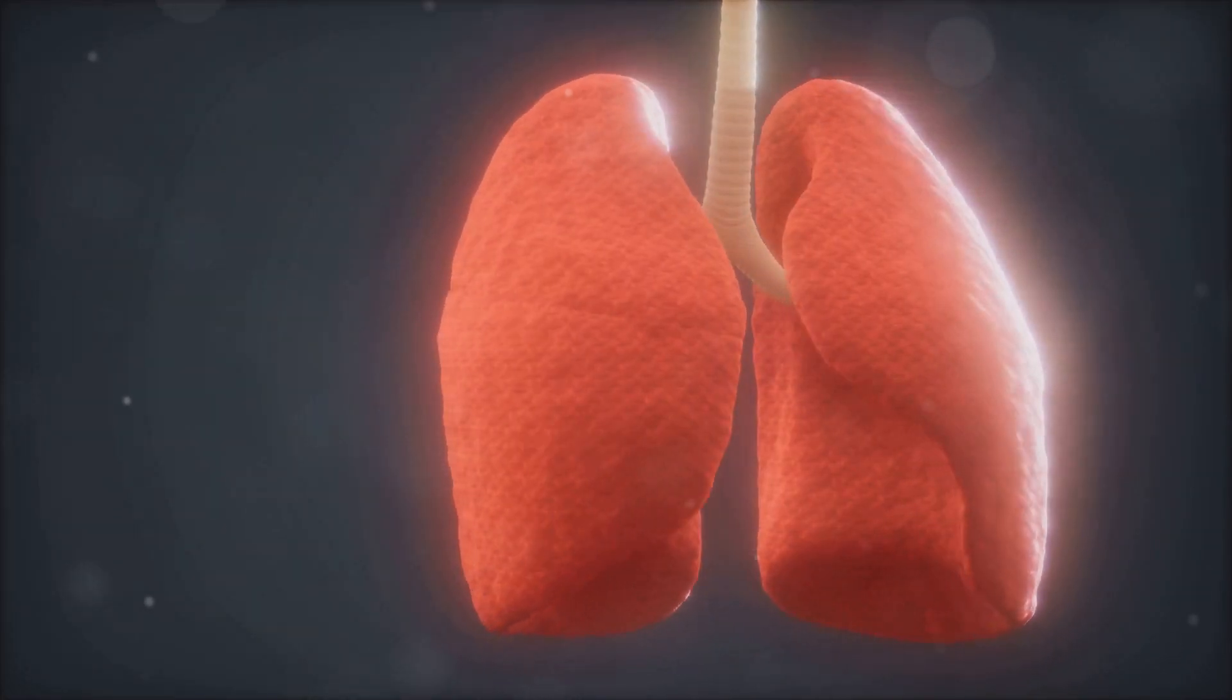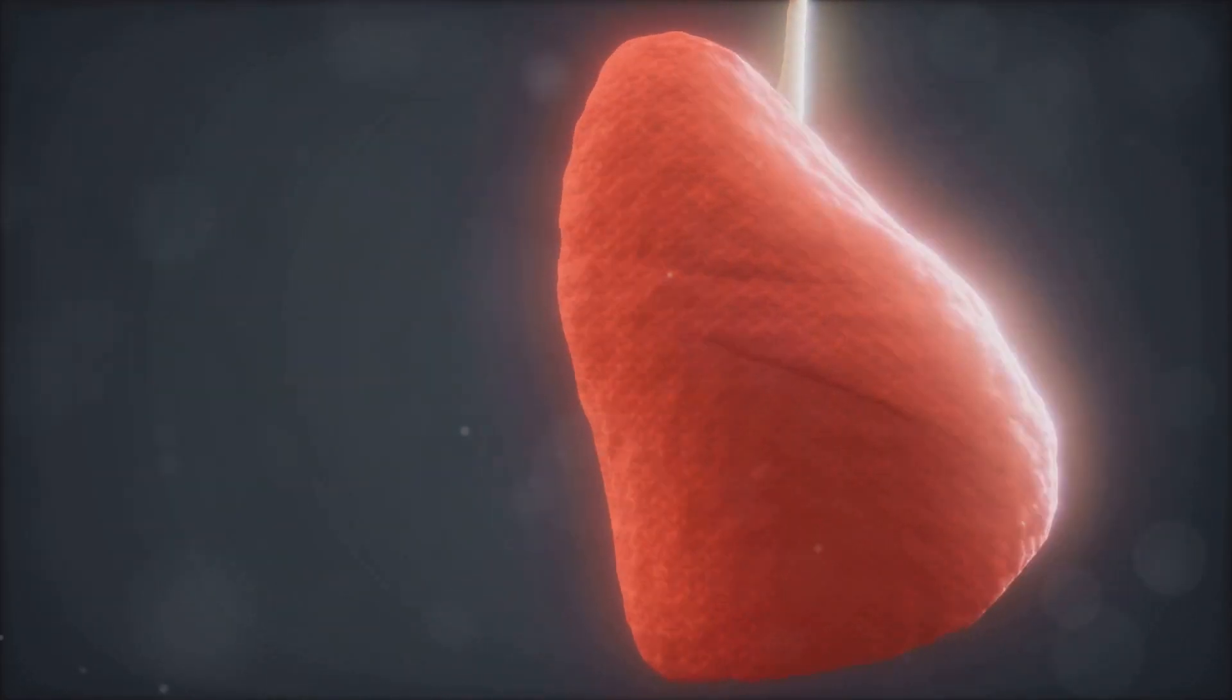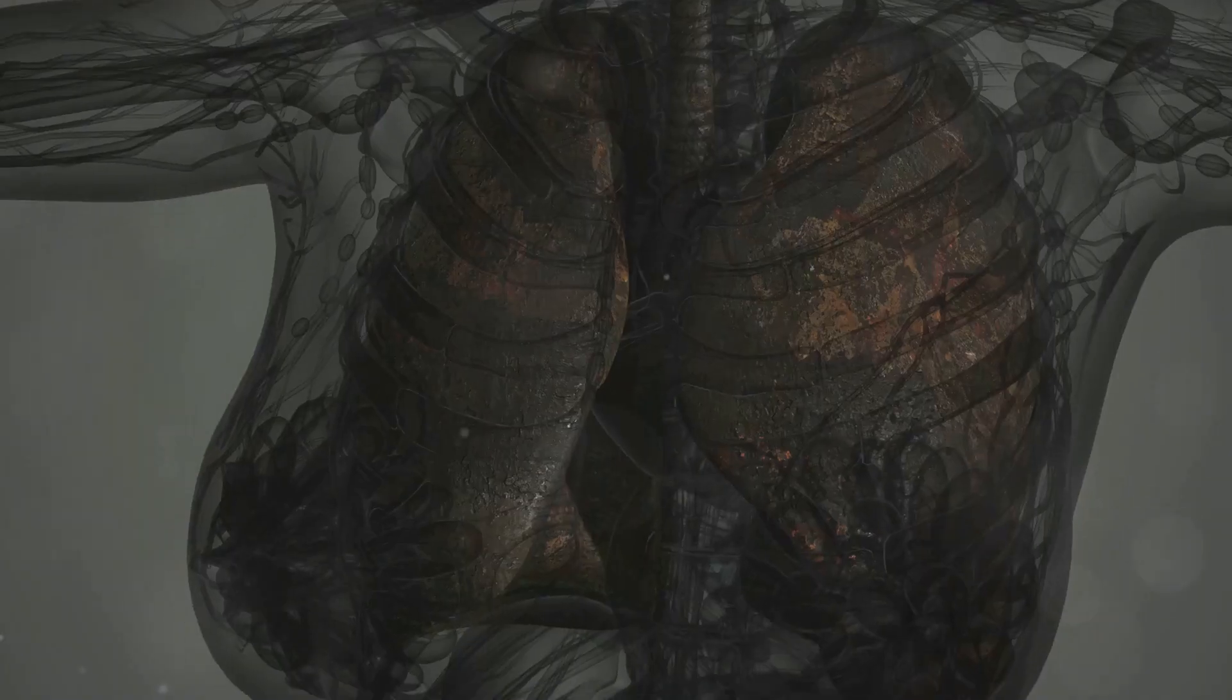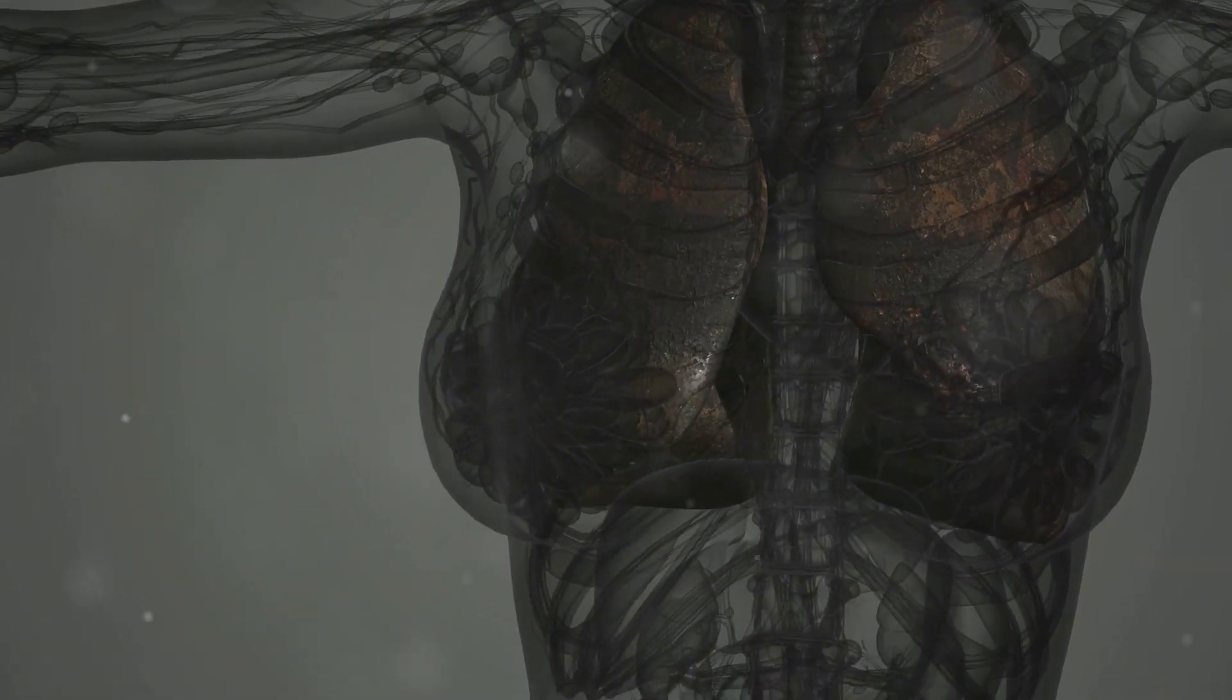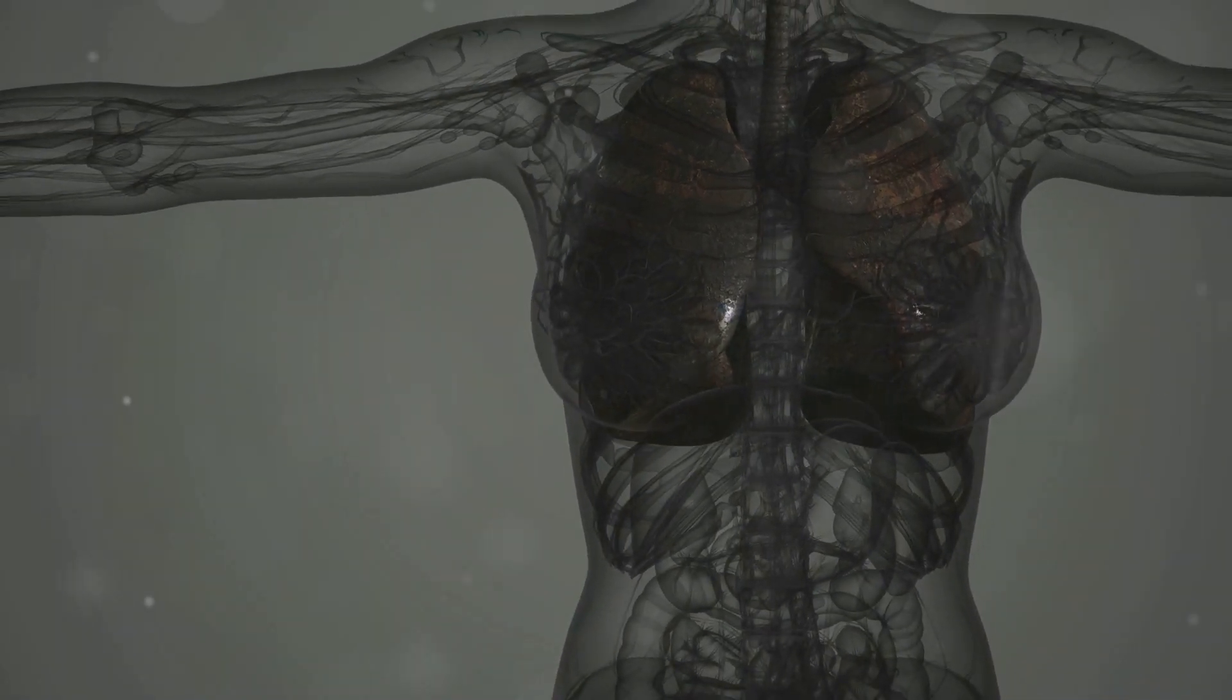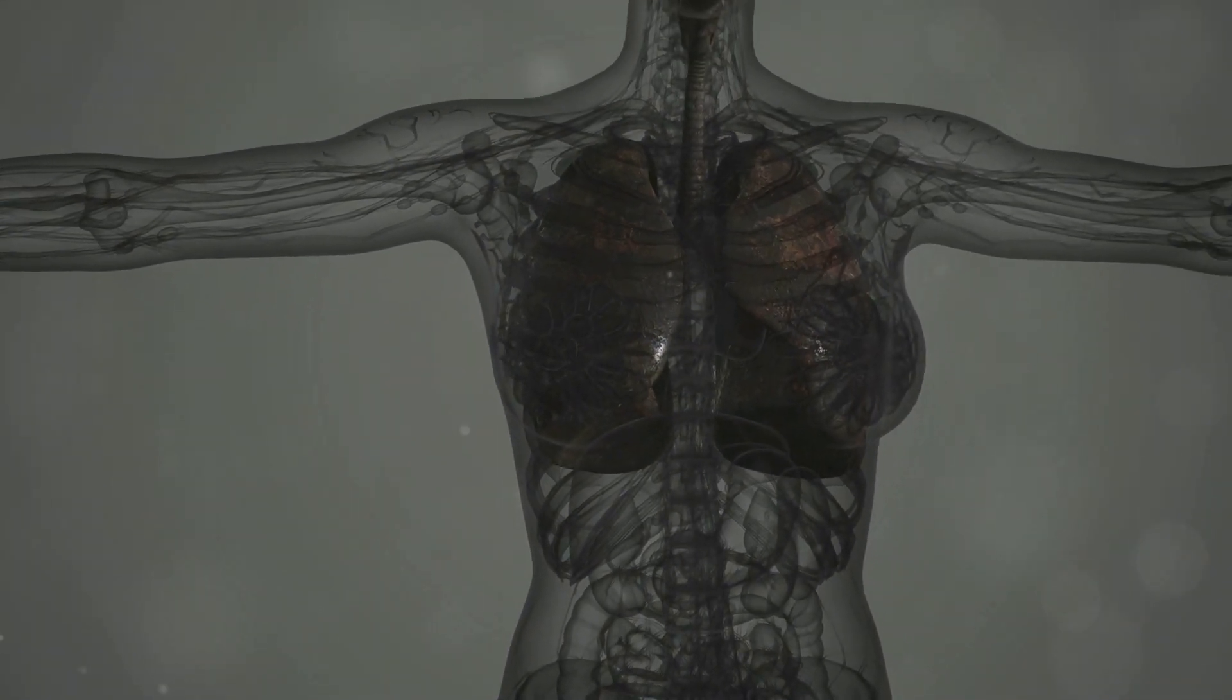But here's something you might not know. Your lungs aren't just a pair of airbags. They're actually made up of millions of tiny sacs called alveoli, which increase the surface area available for gas exchange.